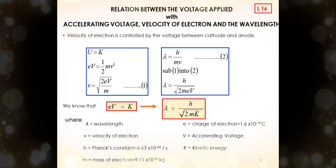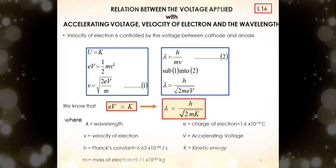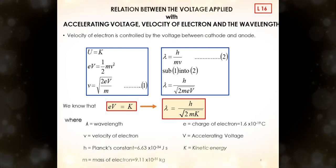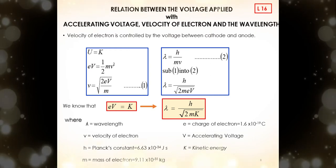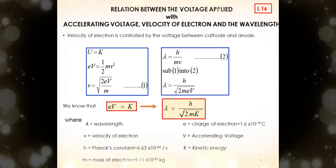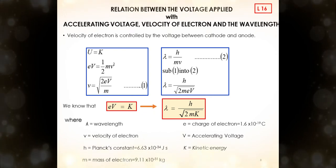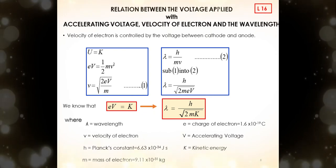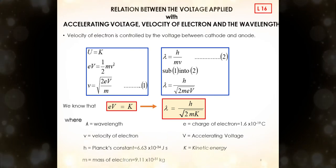Here is the relationship between the voltage applied with the accelerating voltage, velocity of electron, and the wavelength. We can use this equation when the velocity of electron is controlled by the voltage between cathode and anode. U, the potential energy to accelerate electron, is equal to K, the kinetic energy of the electron.